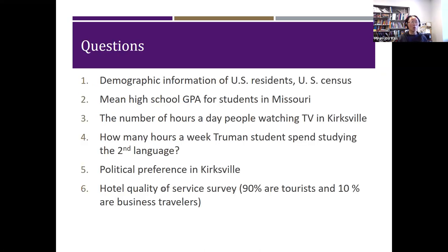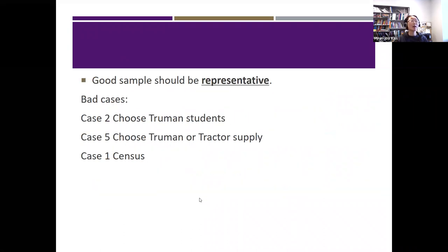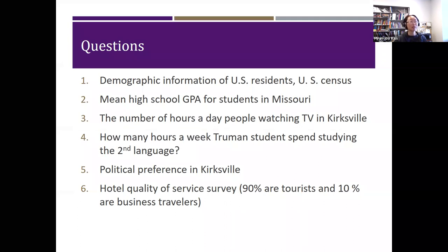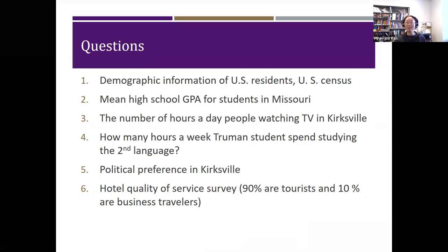Some bad cases: when thinking about mean high school GPA for Missouri, if you choose conveniently — because you're at Truman — you just choose a bunch of Truman students and ask their GPAs. Do you think that's representative of all high schools in Missouri? Probably not. Similarly, if you're choosing to ask about political preference in Kirksville only in front of Truman or only at Tractor Supply, and you take a sample at Truman only, it's probably not going to be representative of political views in Kirksville.